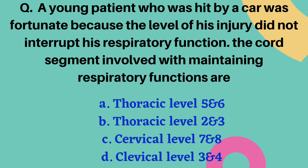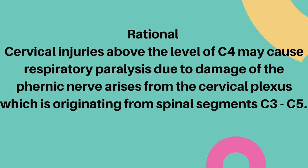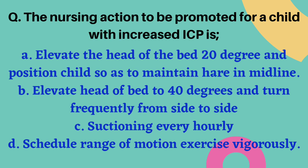A young patient hit by a car was fortunate because his level of injury did not interrupt respiratory function. The cord segments involved in maintaining respiratory function are: thoracic level 5–6, thoracic level 2–3, cervical level 7–8, or cervical level 3–4. The correct answer is option D — cervical level 3 and 4. Cervical injuries above C4 may cause respiratory paralysis due to damage of the phrenic nerve, which arises from the cervical plexus at spinal segments C3 to C5.